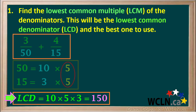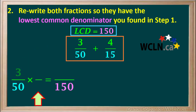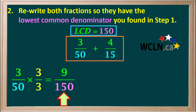So 150 is our lowest common denominator. The next step is to rewrite both fractions so they have the common denominator we found in step 1. The first fraction is 3 fiftieths. To change the denominator 50 to 150, we must multiply it by 3. Therefore, we must also multiply the numerator by 3. So 3 fiftieths can be rewritten as 3 times 3, or 9 over 150.